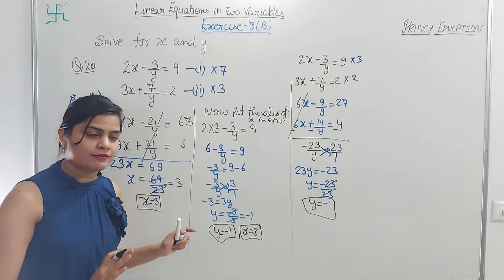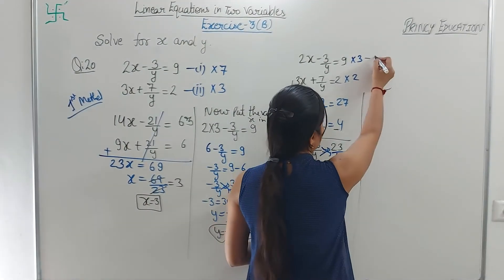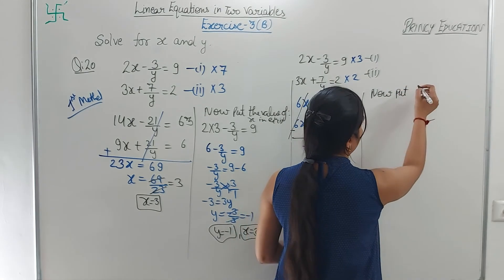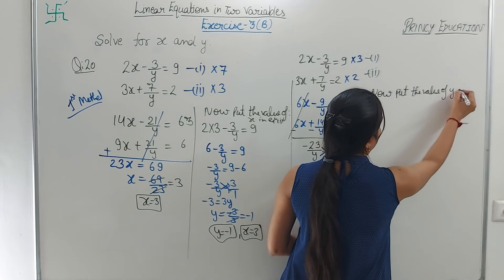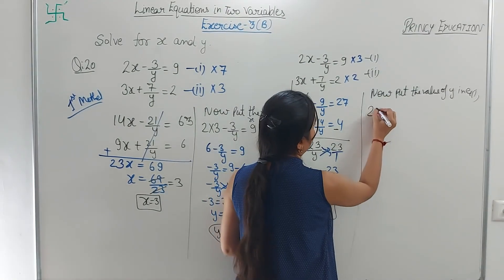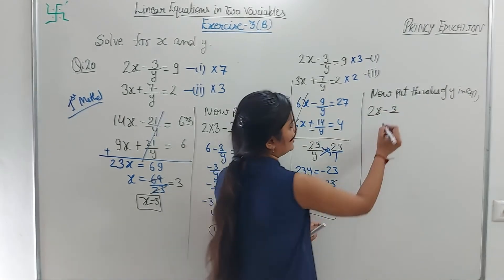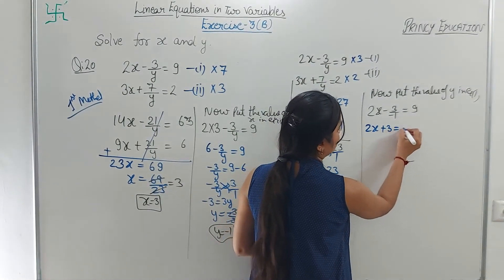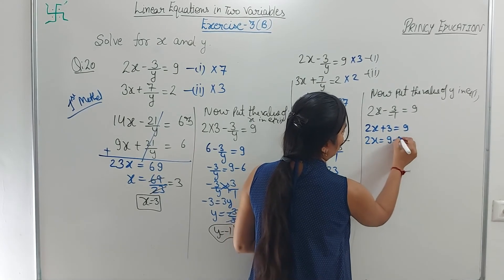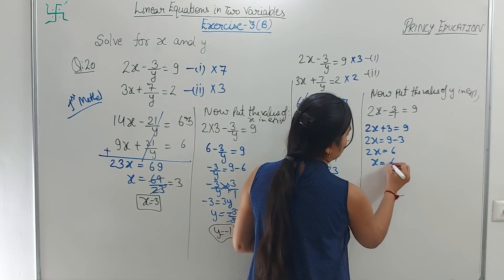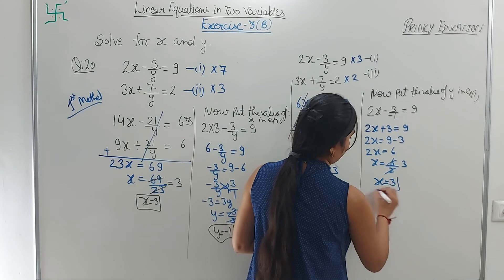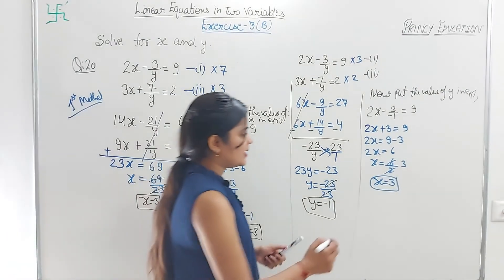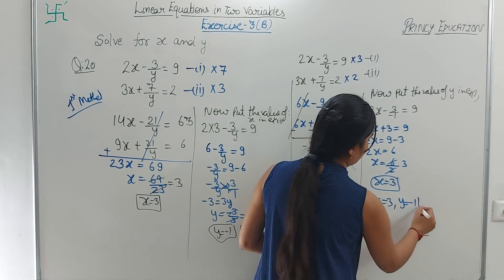Now put y = -1 in equation 1: 2x - 3/(-1) = 9. Minus divided by minus gives plus, so 2x + 3 = 9. Therefore 2x = 9 - 3 = 6. So x = 6/2 = 3. Again x = 3 and y = -1 — proven the same by both methods.